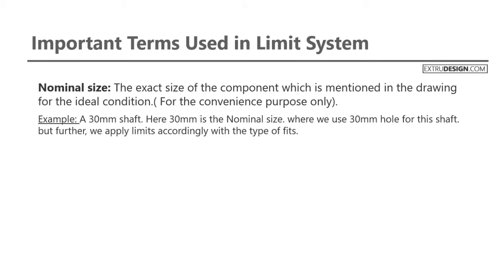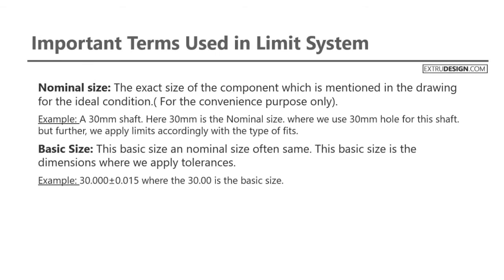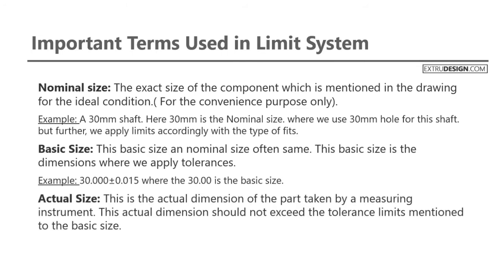The second term is basic size. Basic size and nominal size are more often the same. Basic size is the dimension where we apply tolerances. For example, 30.000 ± 0.015, where 30 mm is the basic size and 0.015 are the limits.